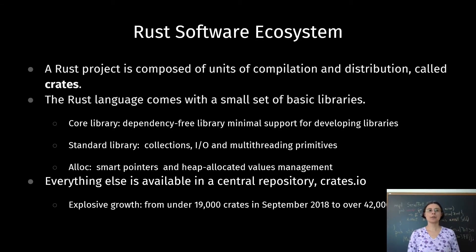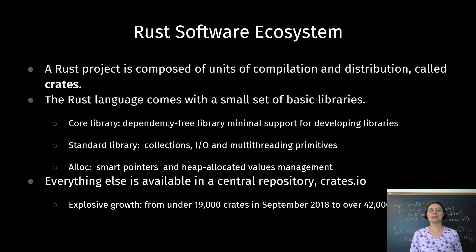A Rust project is composed of units of compilation called crates, and the Rust language itself comes with a very small set of crates or basic libraries: the core library and standard library, which includes collections, IO and multi-threading primitives, and memory management. Everything else is available in a central repository called crates.io.